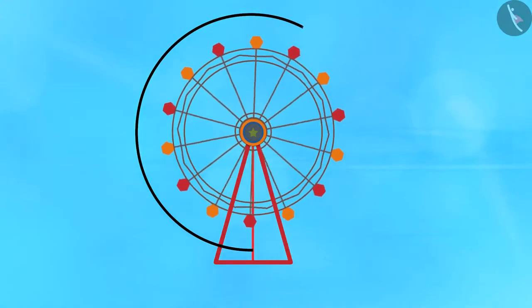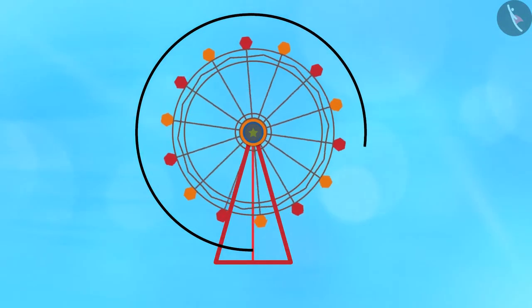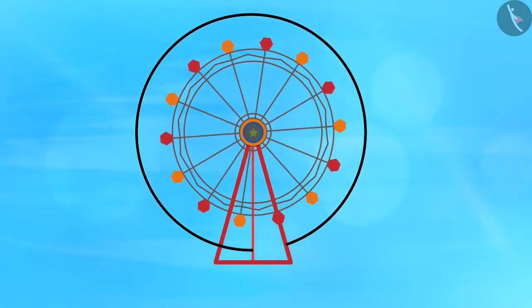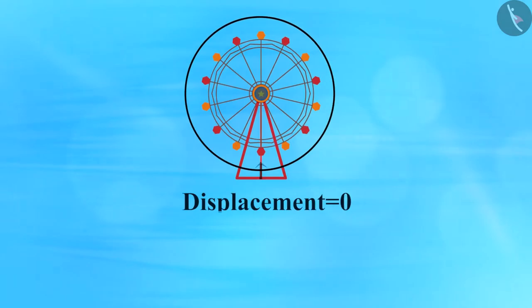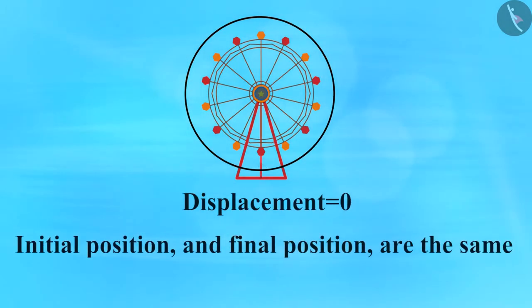Once again, the wheel starts rotating. When it finally stops, you are again at the bottom. Can you determine your displacement here? Here, displacement is equal to zero, since your initial position and final position are the same.